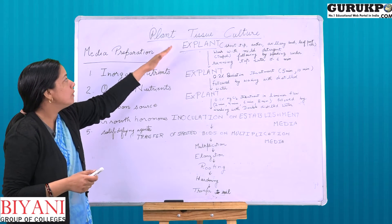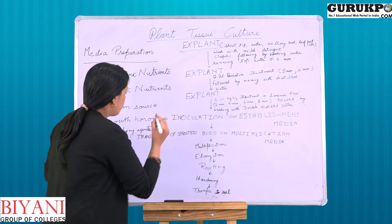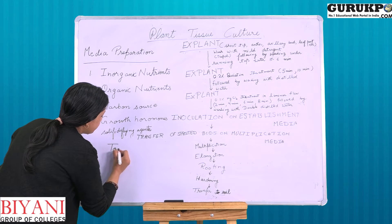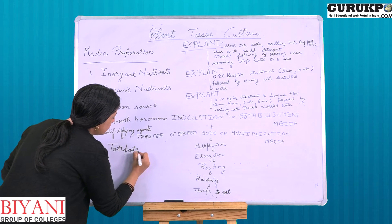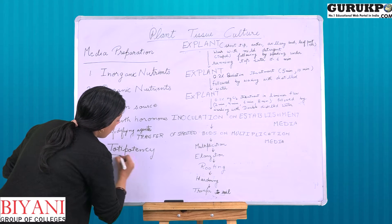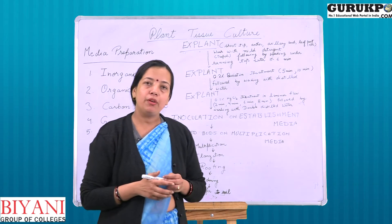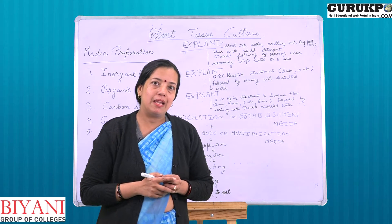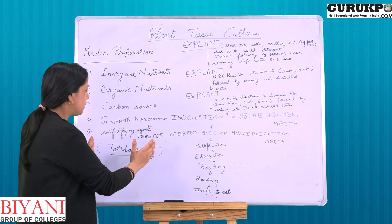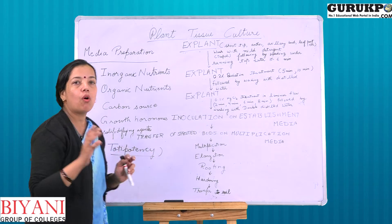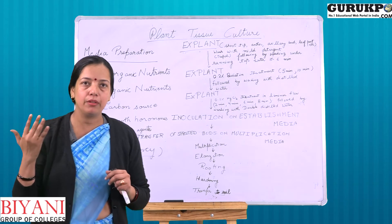This technique is based on the property of the plant cells known as totipotency. Totipotency is the ability of a plant cell to develop into a whole organism, and this property is based on the fact that all the cells of a plant have the same genetic constitution.